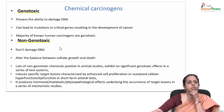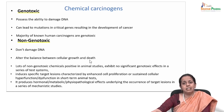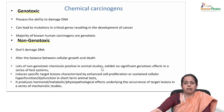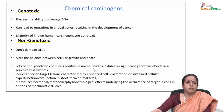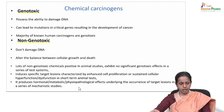For non-genotoxic carcinogens, they do not damage DNA directly — they alter the balance between cellular growth and death and may not raise adducts, and are negative in some mutagenicity tests. But they are capable of inducing cancer by a secondary mechanism not related to direct DNA damage. Many non-genotoxic chemicals positive in animal studies exhibit no genotoxic effects in test systems. They include specific target lesions characterized by cell proliferation or sustained cellular hyperfunction in short-term animal models, and produce hormonal, metabolic, and pathophysiological effects underlying the occurrence of target lesions.